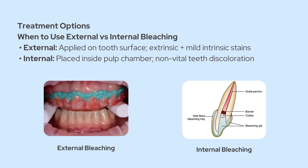Now when we think about treating these stains, external bleaching is applied on the outside of the tooth, targeting extrinsic stains and some mild intrinsic stains by applying the bleaching agent to the surface. That's the focus today. But sometimes when a tooth is non-vital and has darkened from the inside, like after root canal treatment, that's when we use internal bleaching. In that case, we actually put the bleaching agent inside the pulp chamber.